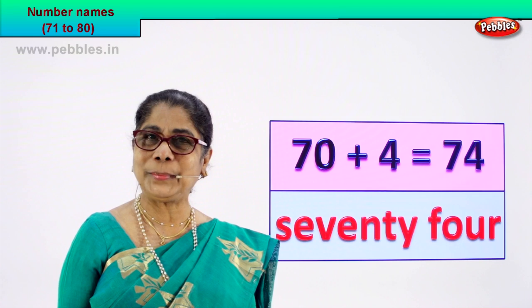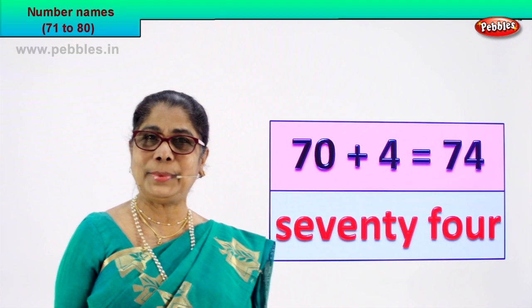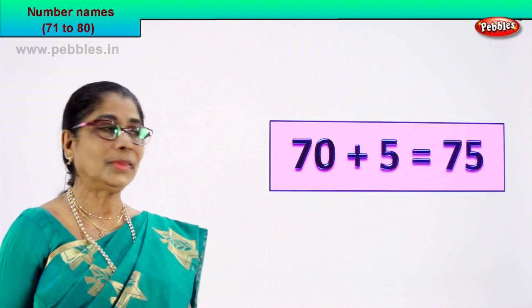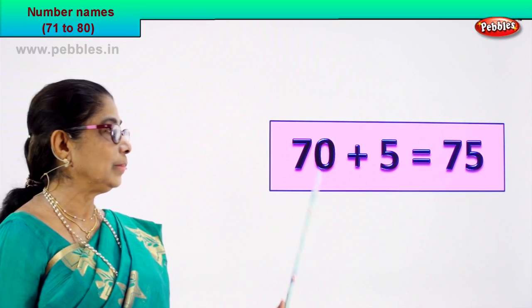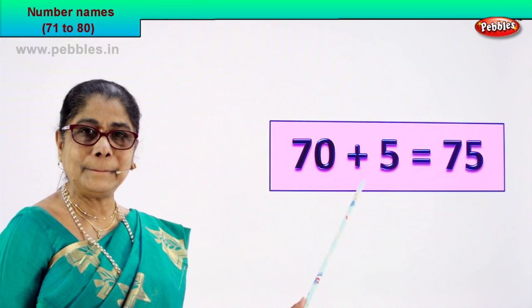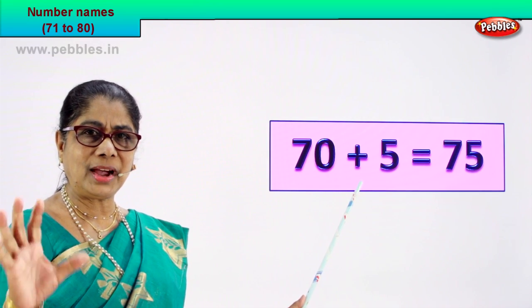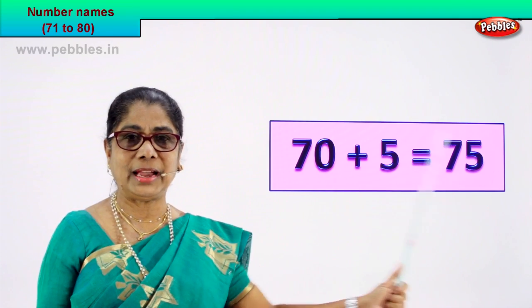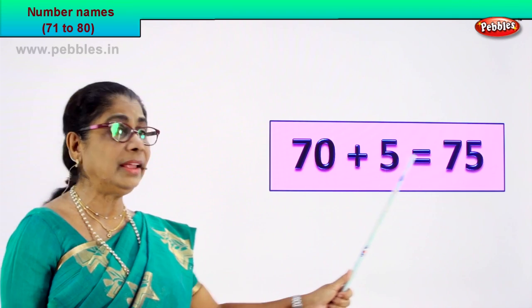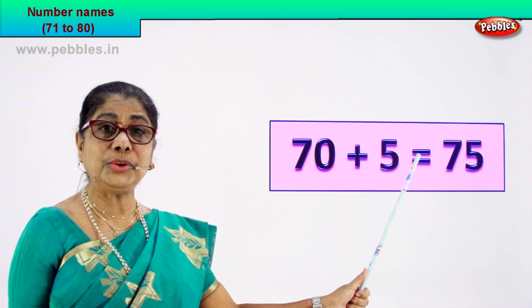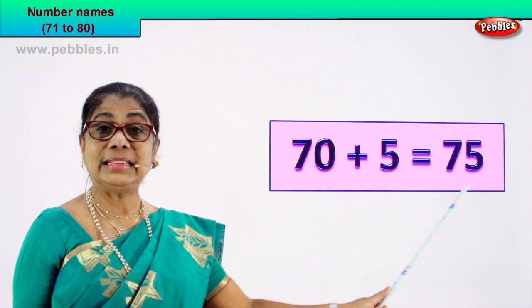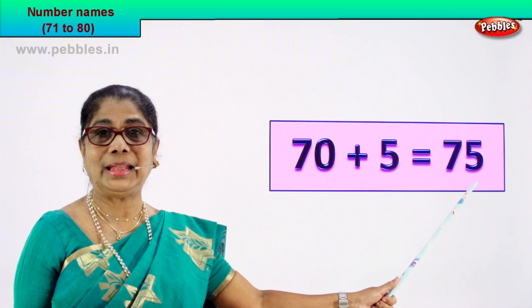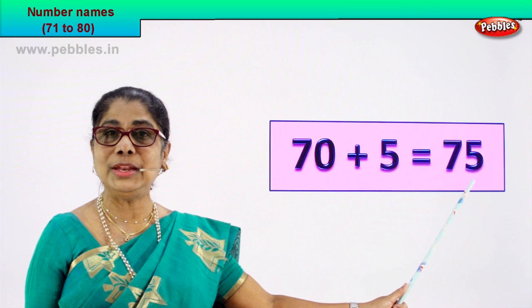Look — 70 plus 5 is equal to 75. What is 70 plus 5? Equal to 75. 7 and 5 — 75. This is the numeral.